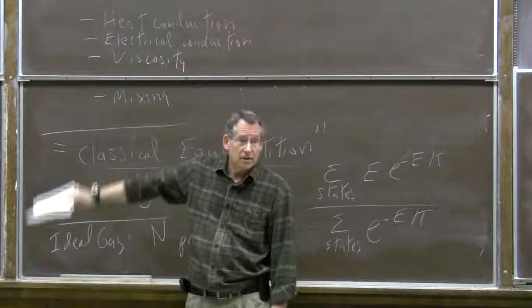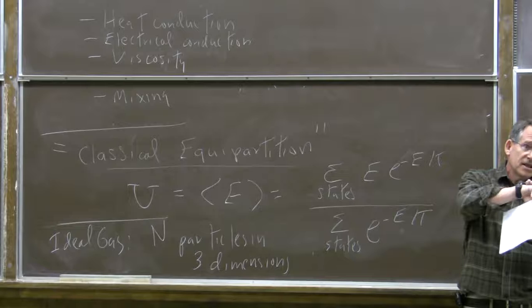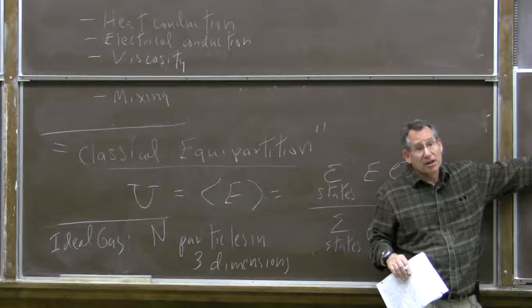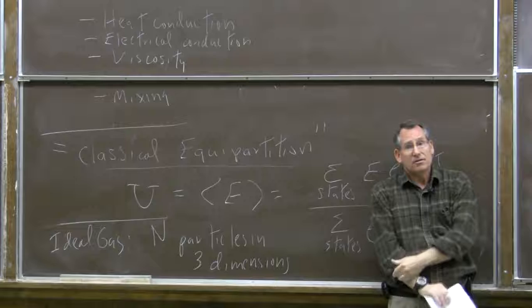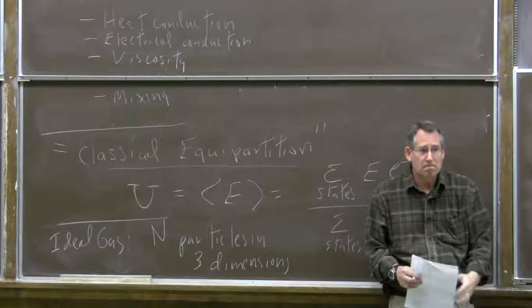If you add some energy locally so some of the gas is a little bit warmer, how long does it take that heat to spread out? It's delayed because of collisions with other molecules, so it spreads out gradually — fast molecules have to make a random walk to travel a long way. That's the origin of heat conductivity.